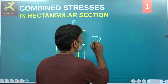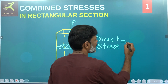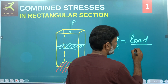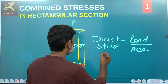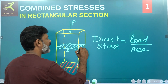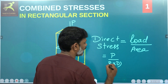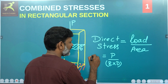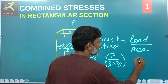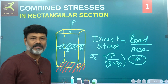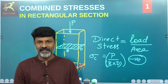So if we look at the direct stress, this direct stress is nothing but load divided by area — it is a fundamental formula, the direct stress formula. Therefore, if we look at a section of depth D and width B, the direct stress will be P divided by B into D, which is the cross-sectional area. This is sigma compressive, and obviously its value is negative.